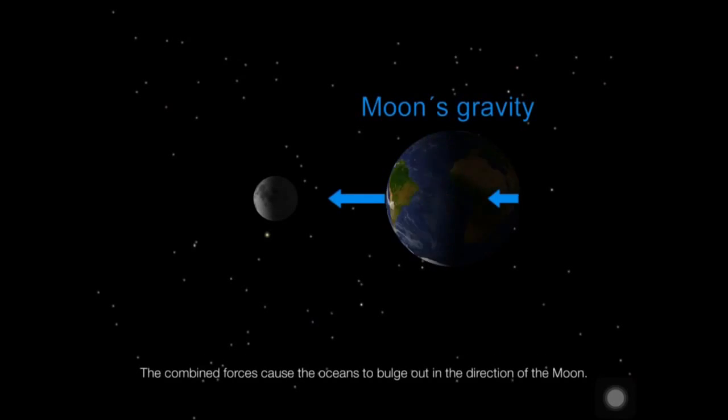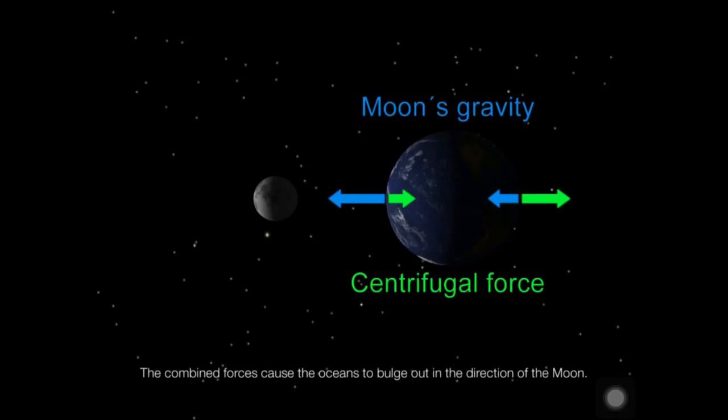Tide is the movement of water caused by complex interactions between the gravitational and rotational forces of the Earth, Moon, and Sun.